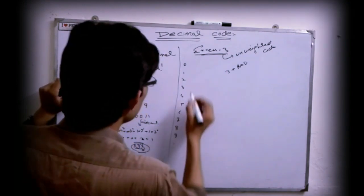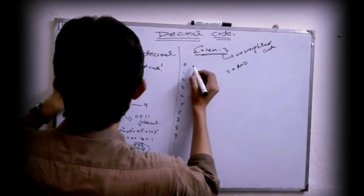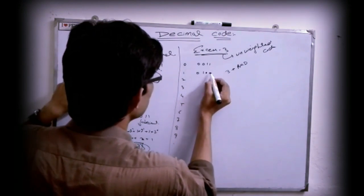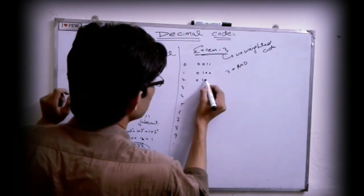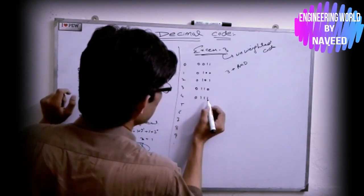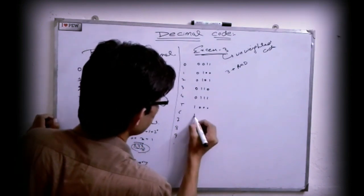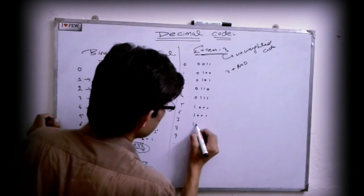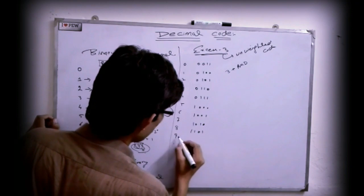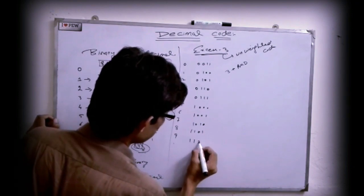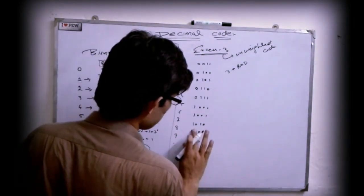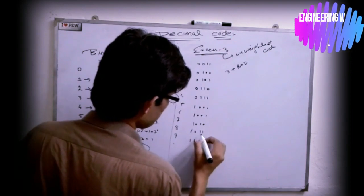For 0, when you add 3 you get this number; then for 1 you get this number, for 2 this number, continuing through each digit. For 8 you get this number, and for 9 you get this number. This is the XS-3 decimal code.